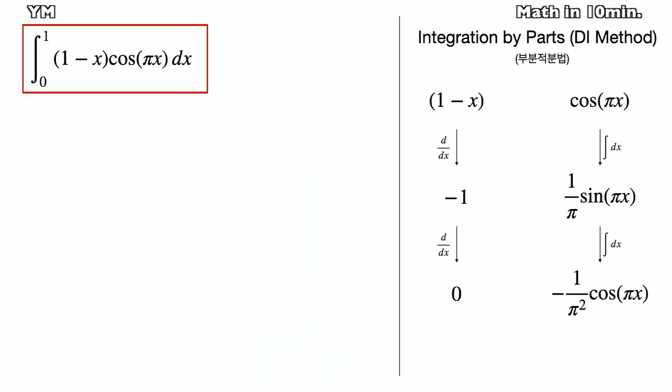In order to calculate this part, I applied DI method of integration by parts. Differentiate 1 minus x until it becomes 0, and integrate the other parts as many as 1 minus x is differentiated.